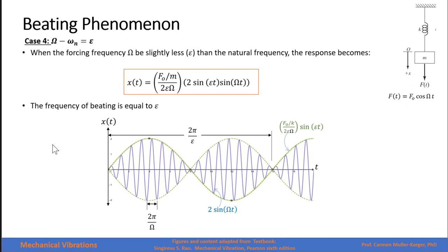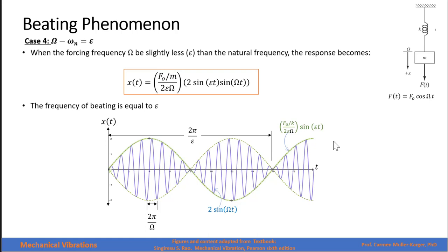Graphing the final beat solution, the amplitude increases and decreases periodically. The envelope function governing the amplitude is a sine wave with frequency epsilon. Since epsilon is a very small number, the period 2 pi over epsilon is very large compared to the frequency of vibration. The blue line represents the response at the excitation frequency, while the envelope curve governs its amplitude.